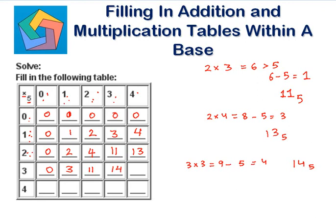3 times 4 is 12. 12 minus 5 is 7, and 7 is again greater than 5, so minus 5 again gives 2. I write 2 on the right hand side, and since I have subtracted 5 two times, 2 will be the carryover — so this is 22 to the base 5.